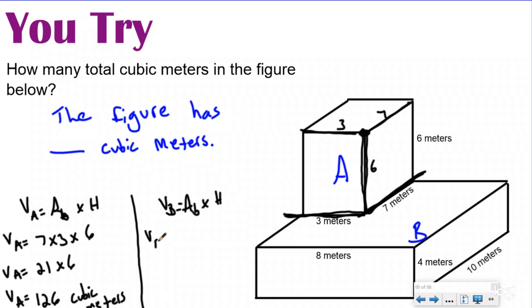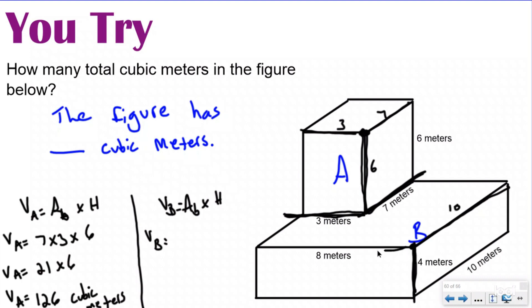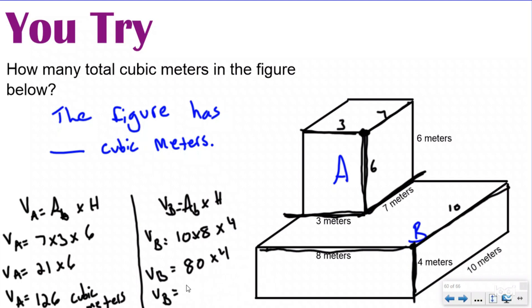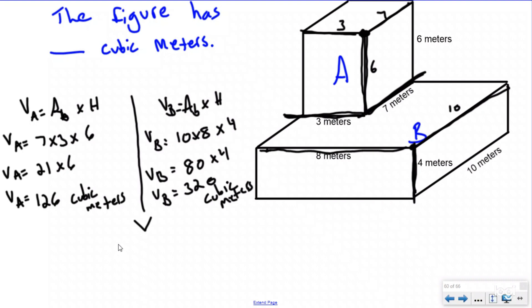Now for volume of prism B, using the front vertex as my peace sign, my length is 10, my height is 4, and my width is 8. Ten times 8 is 80, times 4 is 320 cubic meters. Volume is additive, so I add volume A and volume B: 126 plus 320 is 446 cubic meters.